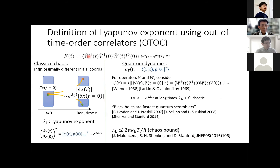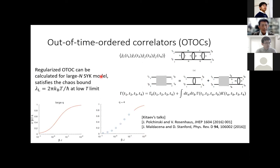Further evidence of holographic correspondence to black holes is obtained by studying out-of-time-ordered correlators. In analogy to the classical chaos case, we can consider OTOCs in quantum systems to extract the Lyapunov exponent characterizing the chaotic dynamics. It has been argued that black holes are the fastest quantum scramblers, expected to have the largest Lyapunov exponent. Maldacena, Shenker, and Stanford proposed that the upper bound of the Lyapunov exponent is written as a product of the temperature and a fundamental constant. This OTOC can also be calculated by diagrammatic expansion for large-N SYK, and in the low temperature limit the chaos bound is reached.